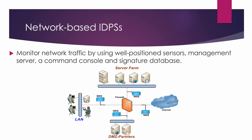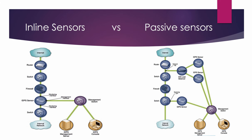These sensors can be deployed in one of two modes: inline sensors and passive sensors. Network-based IDPS sensors are commonly installed behind the firewall and before the local area network, between the firewall and the DMZ, or on any network segment.